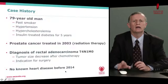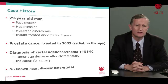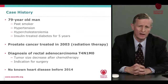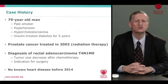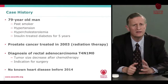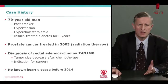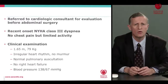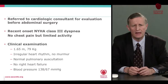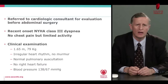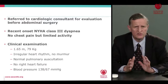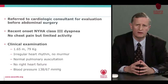The story begins at the end of 2014 with a diagnosis of rectal adenocarcinoma, a large tumor quoted T4N1M0. The first-line treatment was chemotherapy due to the size of the tumor. There was a significant decrease in tumor size, leading to an indication for surgery after five cycles of chemotherapy. This patient, now 79, is referred to the cardiology consultant for preoperative evaluation. He mentions NYHA Class III dyspnea for a couple of months and no chest pain, though this should be interpreted in light of limited activity due to cancer.